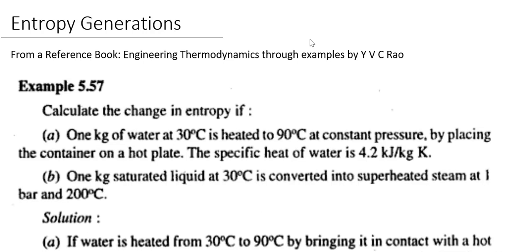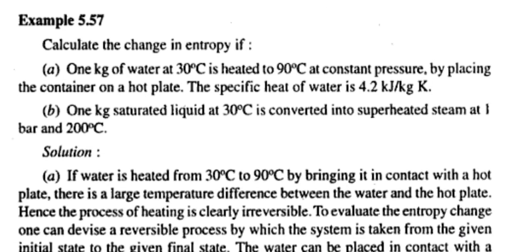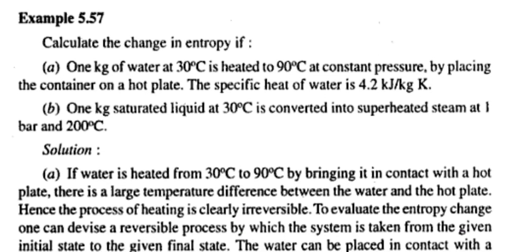Part A: Calculate the change in entropy if one kg of water at 30 degrees centigrade is heated to 90 degrees centigrade at constant pressure by placing a container on a hot plate. The specific heat of water is 4.2 kilojoules per kg Kelvin.